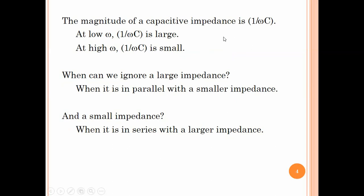The magnitude of a capacitive impedance is 1/ωC. At low ω, the capacitive impedance is large; at high ω, the capacitive impedance is small. We can ignore a large impedance when it is in parallel with a smaller impedance — it acts as an open circuit. We can ignore a small impedance when it is in series with a larger impedance — it acts as a short circuit.